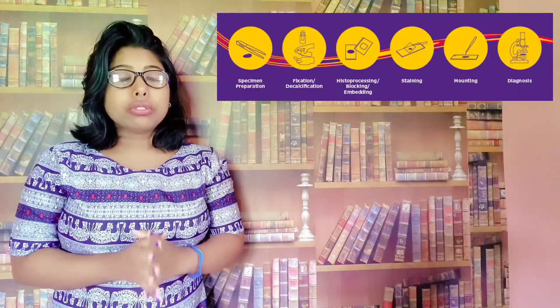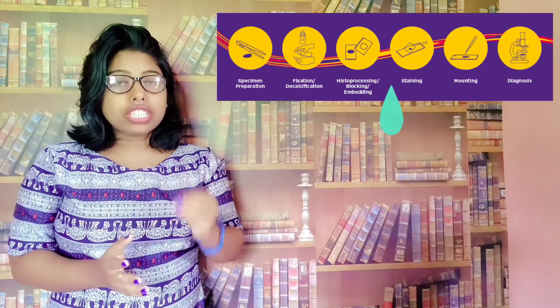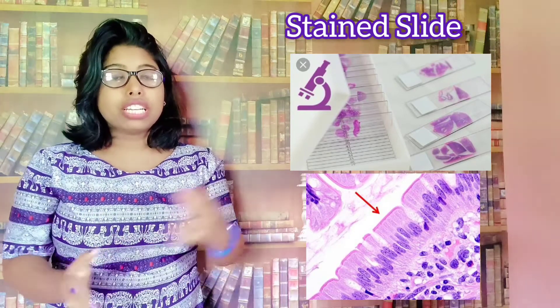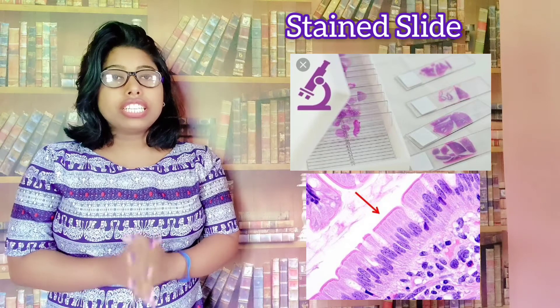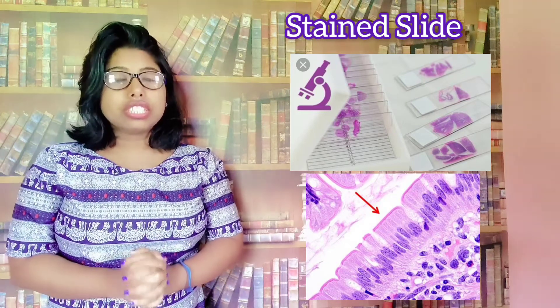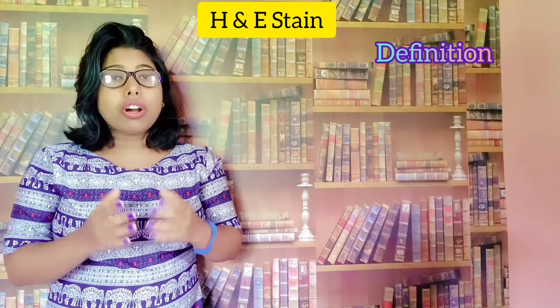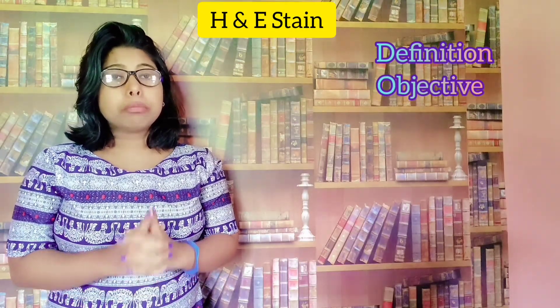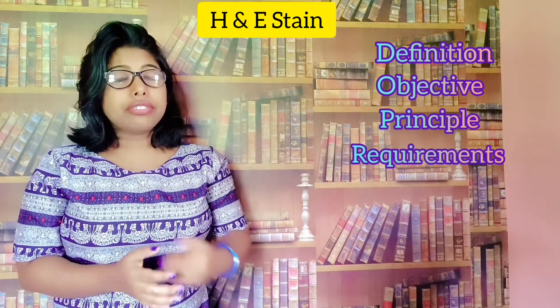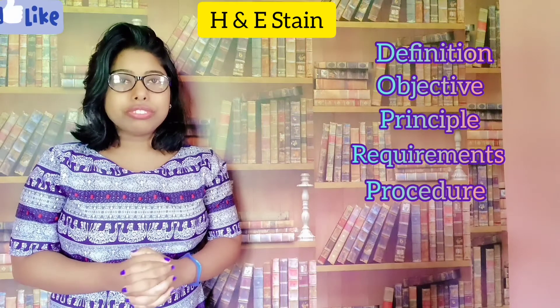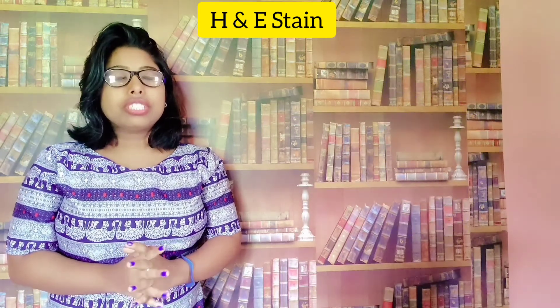Let's start with staining. After microtomy, we go for staining. Staining is a colored dye so that the tissue section can be seen under the microscope — background color, cytoplasm a different color, nuclei a different color. That is the purpose of staining. In this video we will talk about what H&E stain is, what the principle of H&E stain is, what reagents are required for H&E stain, the procedure, and also the results and interpretations.